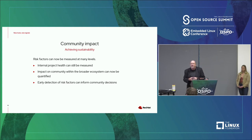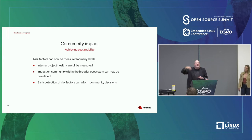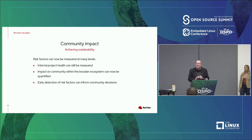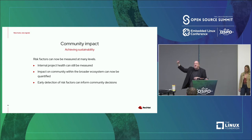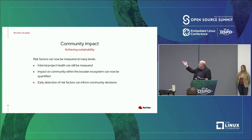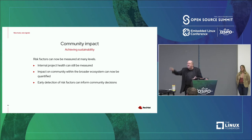Early detection of risk factors can inform community decisions. In the past, community managers always brought their own skills to the table — it was always done anecdotally. A writer is going to focus on documentation; an engineer who becomes a community manager is probably going to focus on processes and agile. That's not bad — it's just what you bring to the table. This approach levels the playing field, so people who are strong in one area and weak in another now have tools to make more informed community decisions.